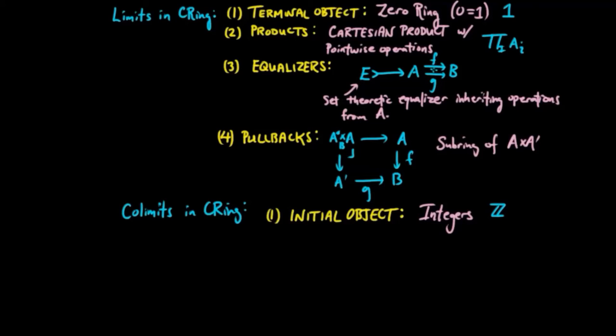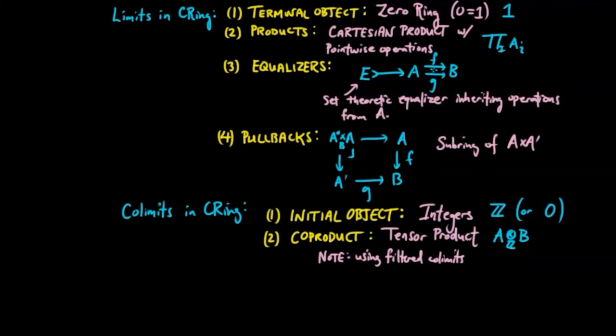For the co-product, we have the tensor product. So for the binary co-product, we can take the binary co-product of two rings A and B as the tensor product. And since we have filtered co-limits also being created by the forgetful functor, we can now construct all co-products as well. It can be given as a filtered co-limit of all the finite tensor products that exist within the diagram.